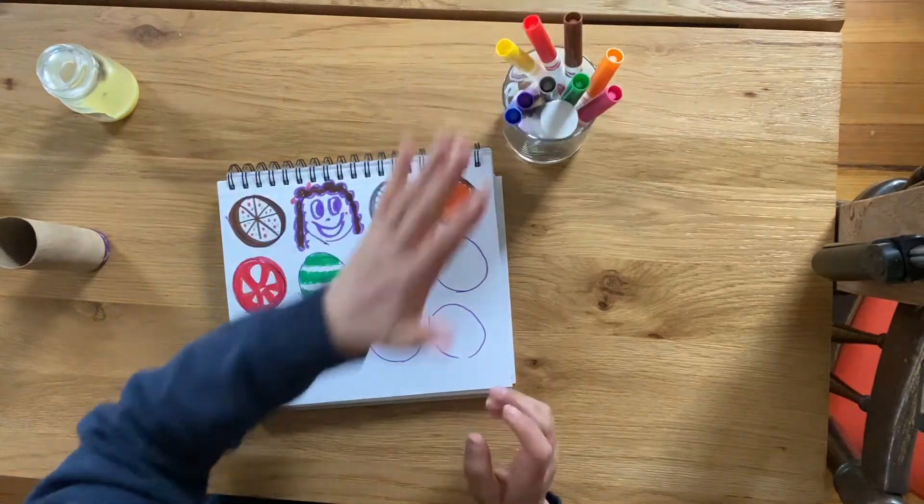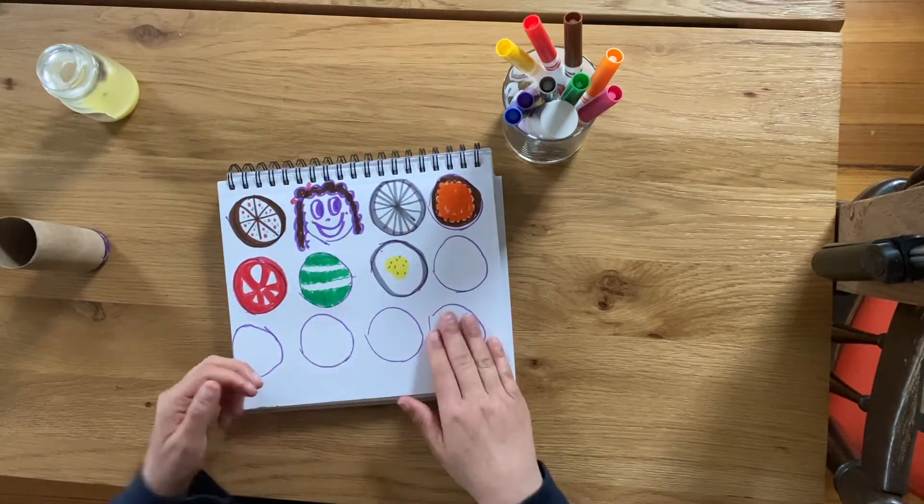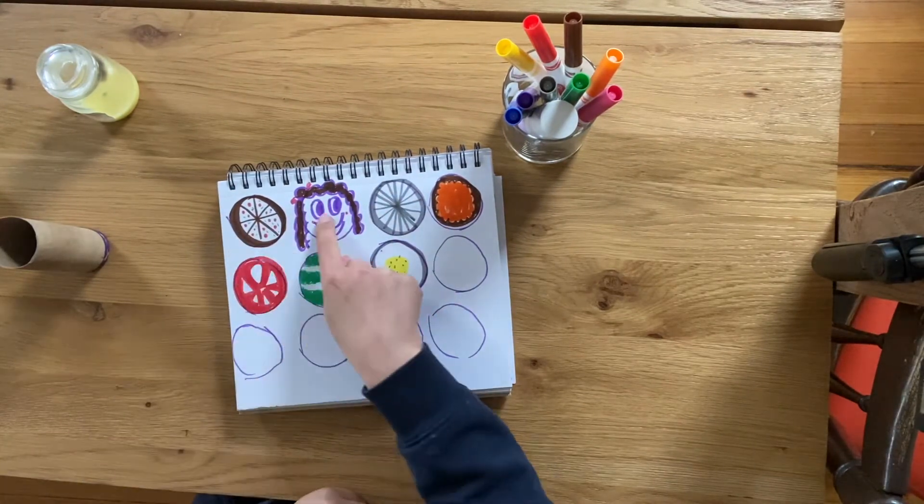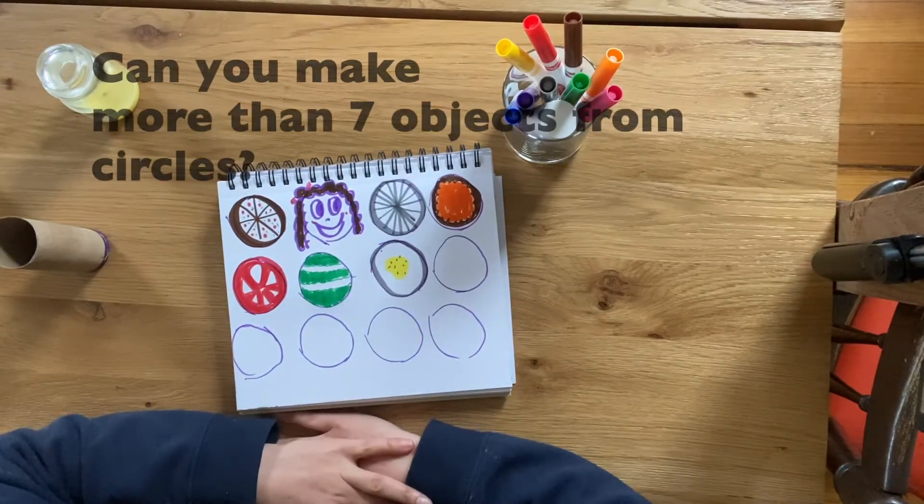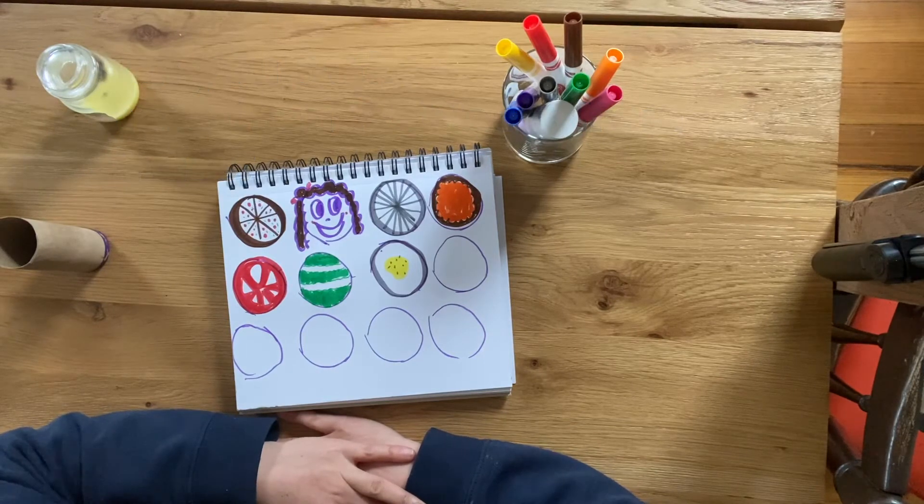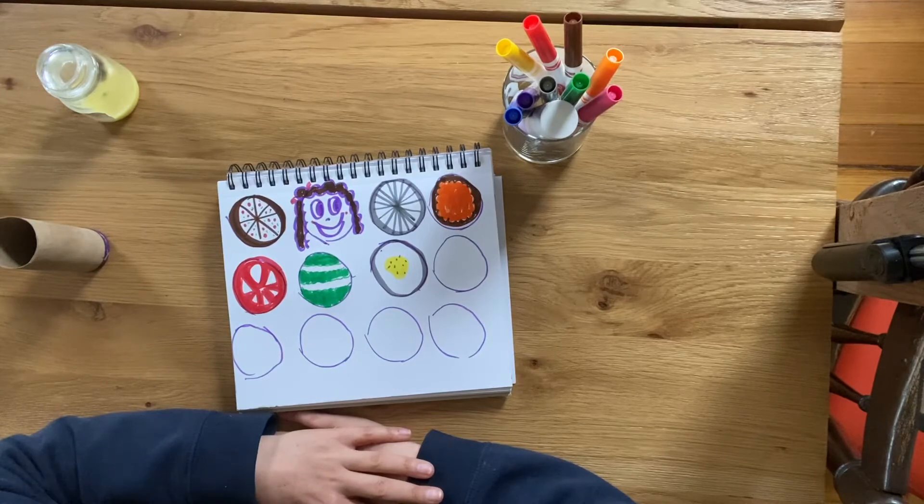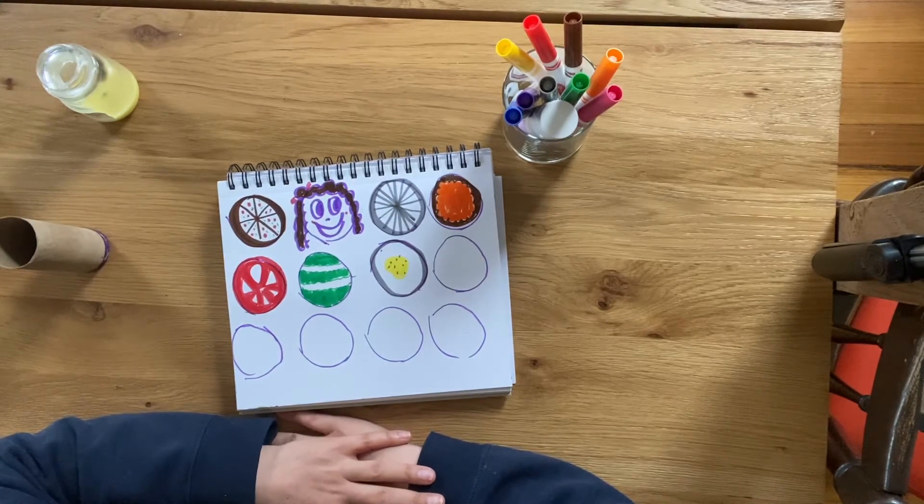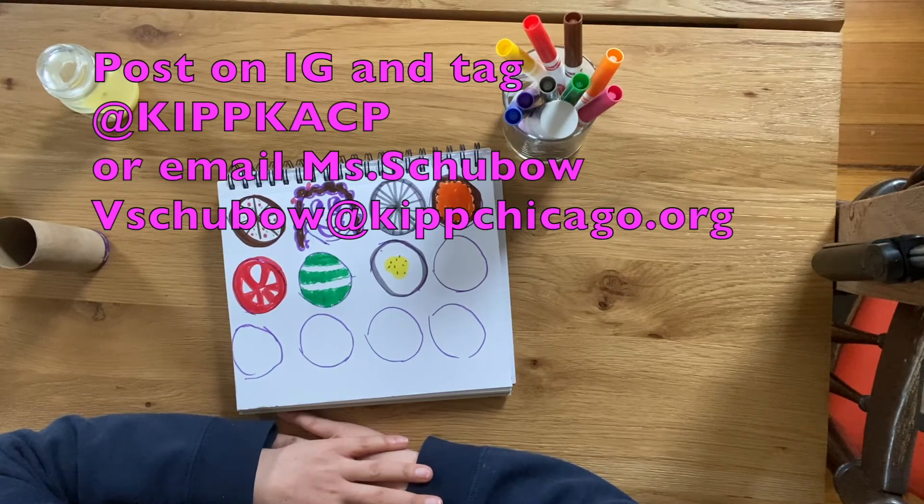So, your job is to fill in as many circles as you can. So far, Mashibo has one, two, three, four, five, six, seven. Can you beat me? Can you make more than seven objects from circles? If you can, post it on Instagram and we'll see who can make the most objects from circles.